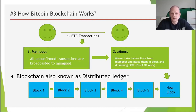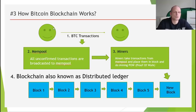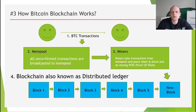For example, someone is sending Bitcoin to someone — John is sending Bitcoin to Lisa, or Lisa is sending Bitcoin to some online shop for a payment to another wallet. The first thing that happens is the transaction, and the second thing is that these transactions go into the mempool.